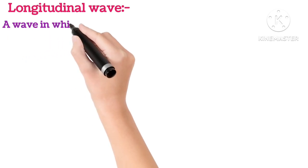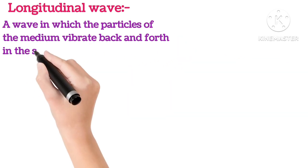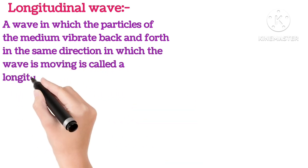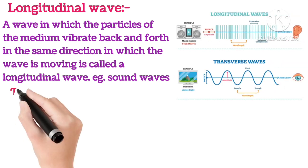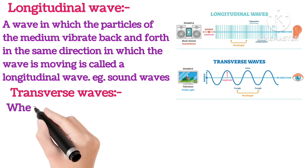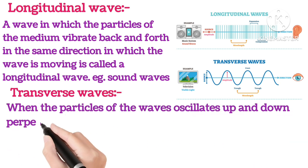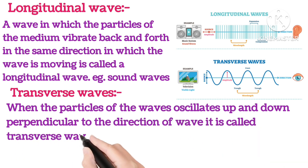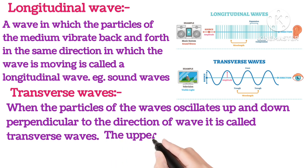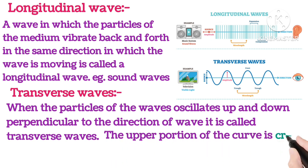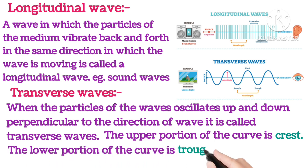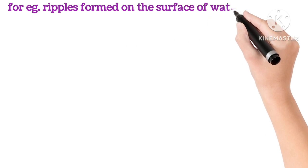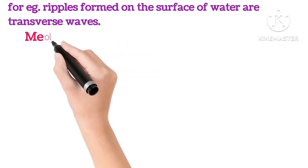Longitudinal wave: A wave in which the particles of the medium vibrate back and forth in the same direction in which the wave is moving is called a longitudinal wave. For example, sound waves are longitudinal waves. Transverse waves: When the particles of the wave oscillate up and down perpendicular to the direction of the wave, they are called transverse waves. The upper portion of the curve is called the crest and the lower portion is called the trough. For example, ripples formed on the surface of water are transverse waves.